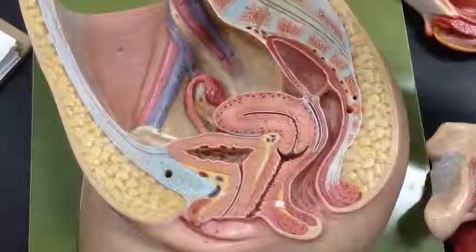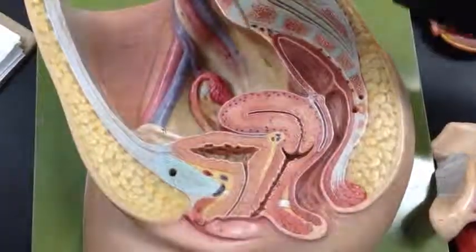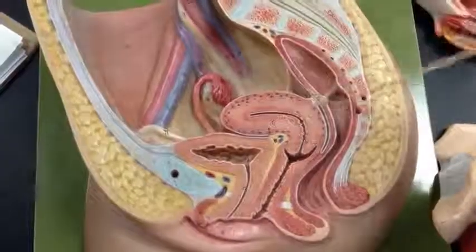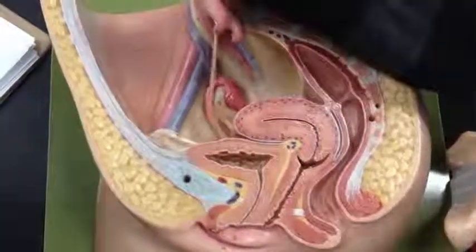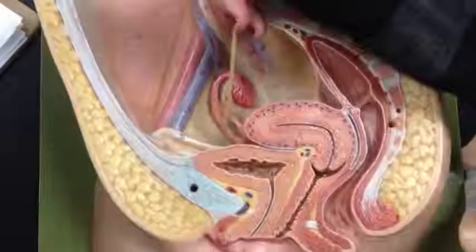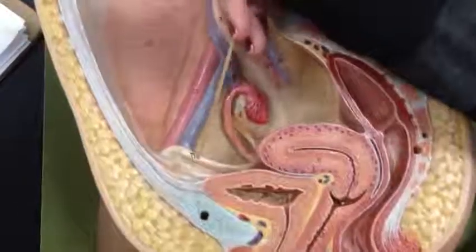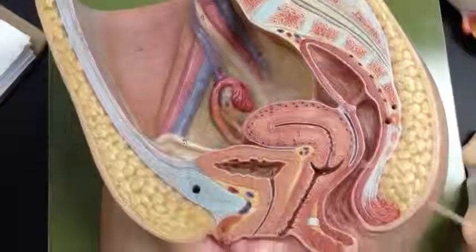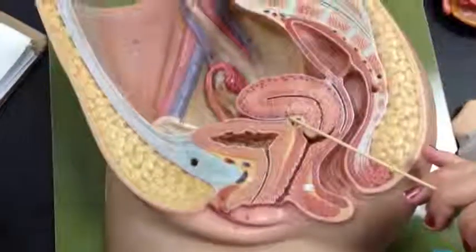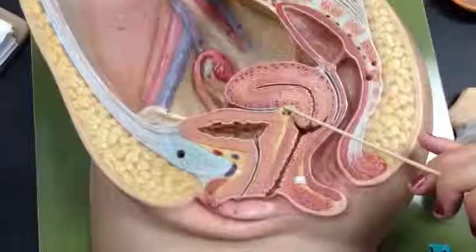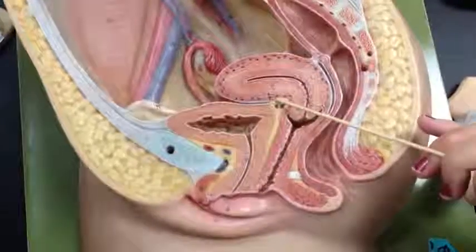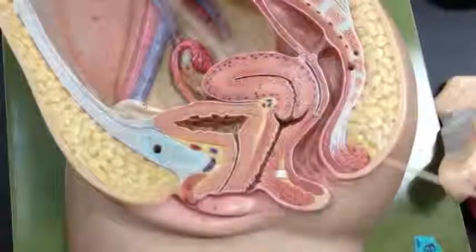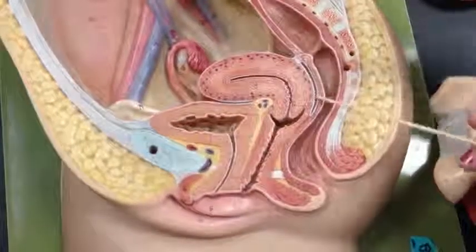This is the broad ligament. This is the round ligament right here. This is the vesical uterine pouch. This is the recto uterine pouch.